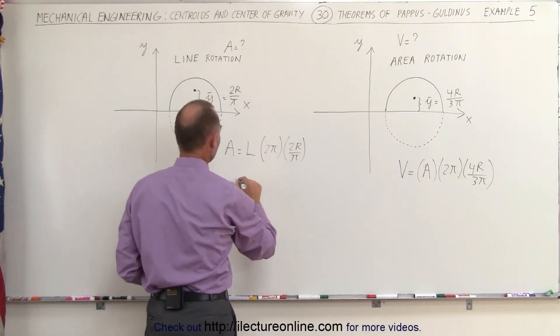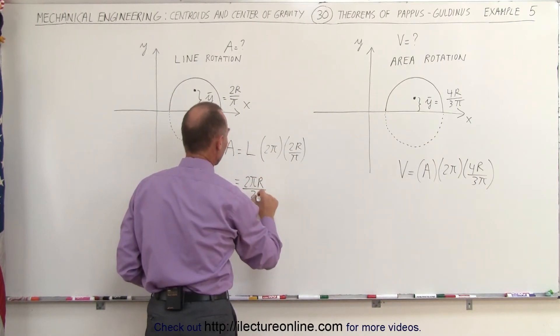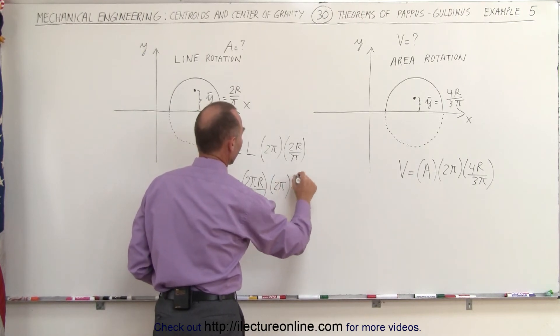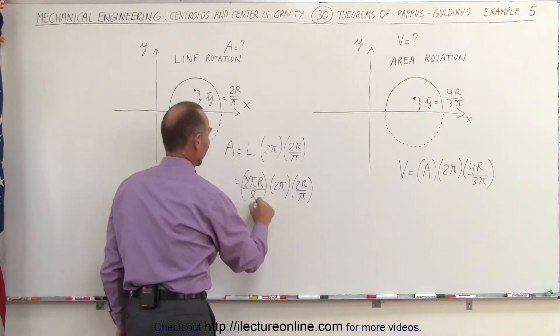The length of a semi-circle is equal to 2π times the radius. We have to divide that by 2, because we have a semi-circle, times 2π times 2r divided by π. The 2's cancel out here.